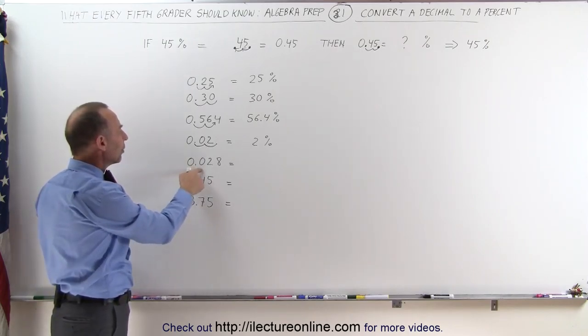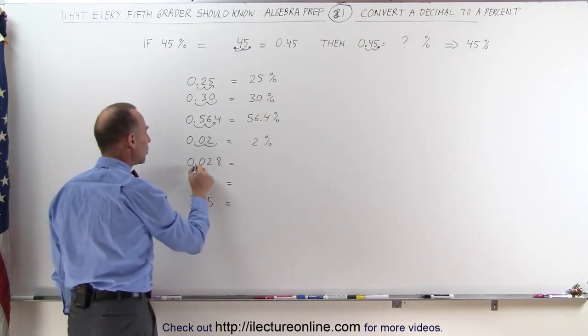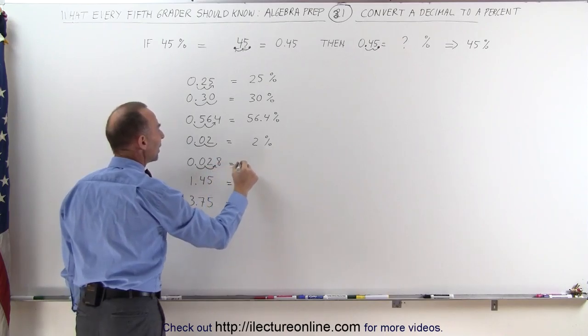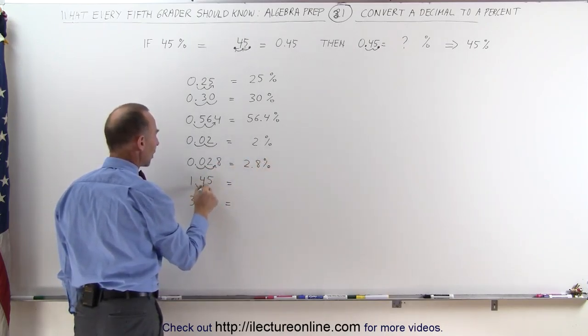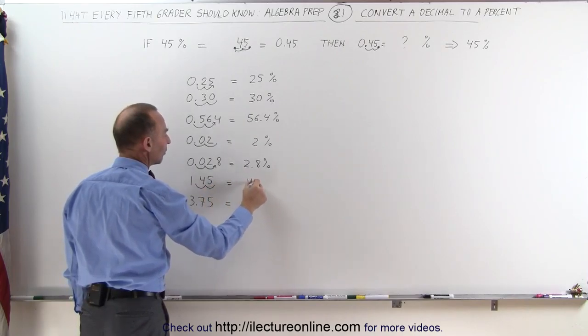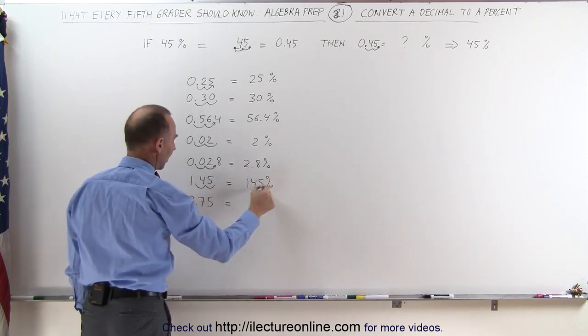What do we do here at 0.028? Again, no problem, we move the decimal place over twice, and we get 2.8%. Here, we move it over twice, and we get 145%.